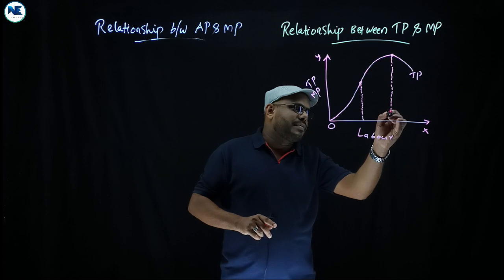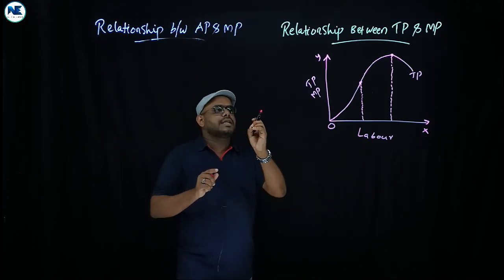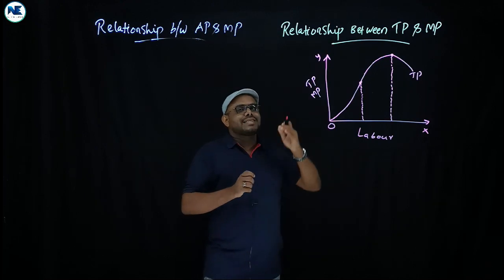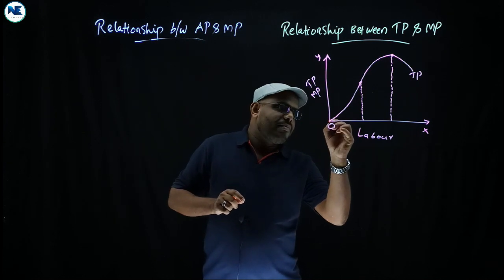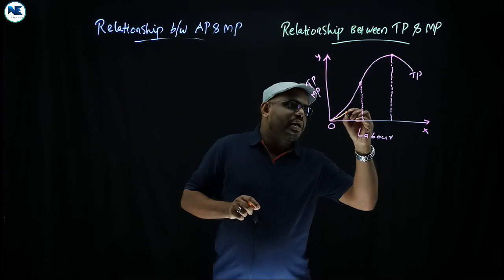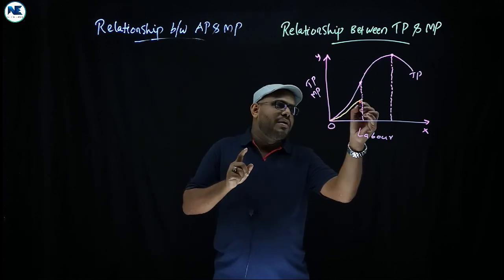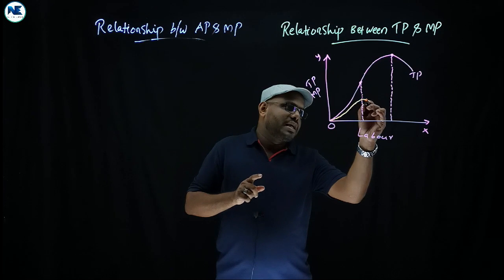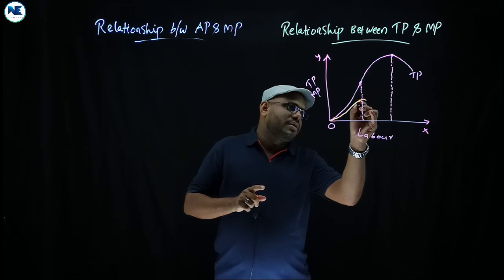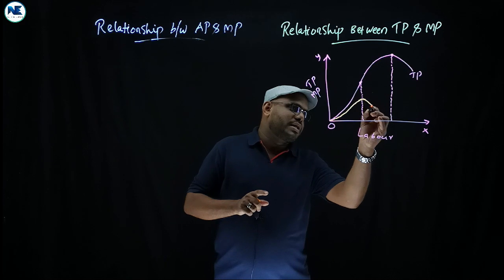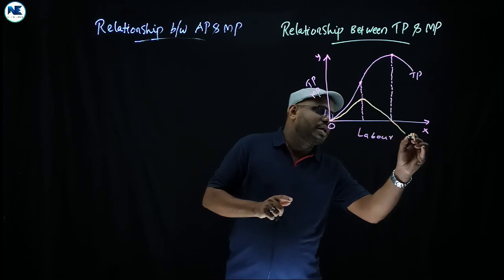Now we draw the marginal product curve in a different color. Marginal product increases and reaches a maximum level, then after that marginal product declines. It declines and marginal product becomes zero, and then after that marginal product becomes negative.